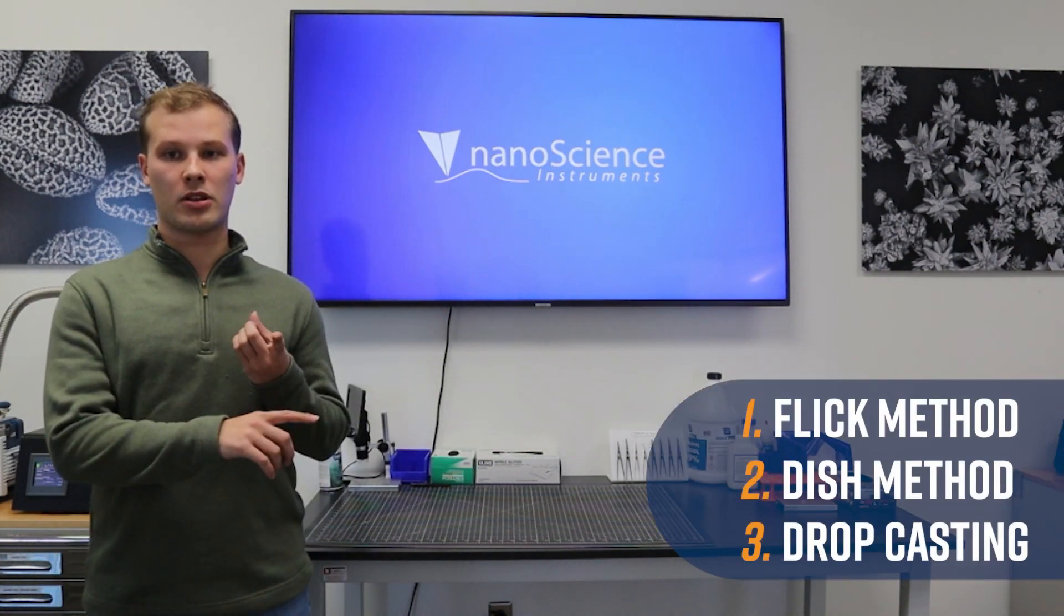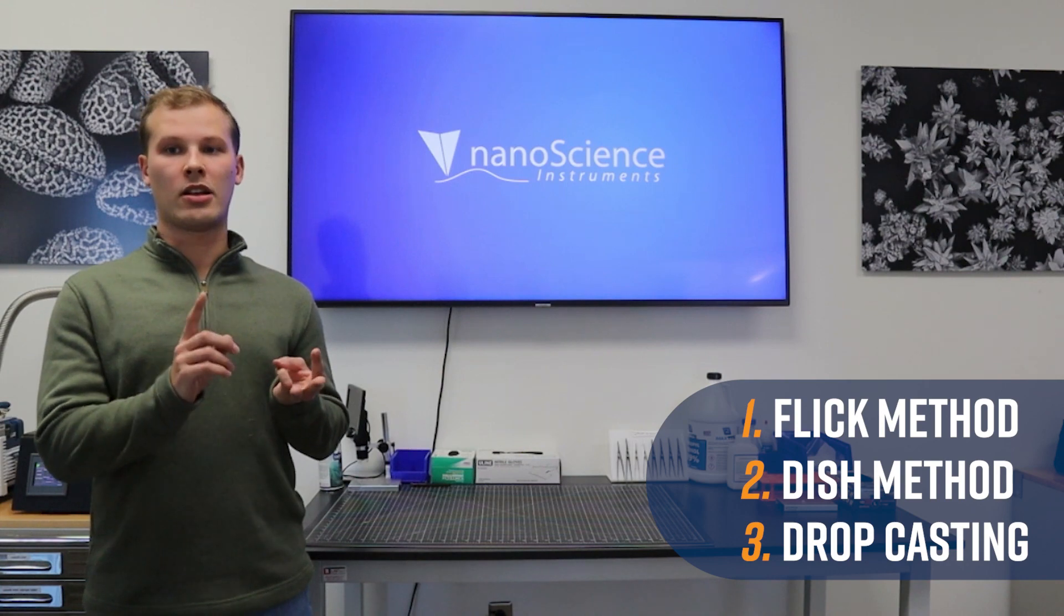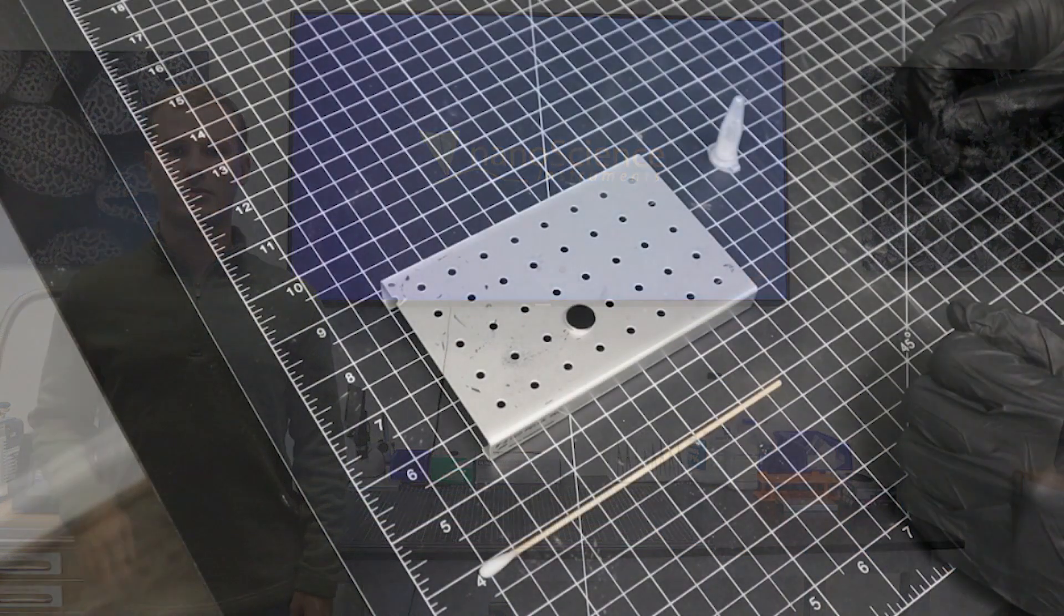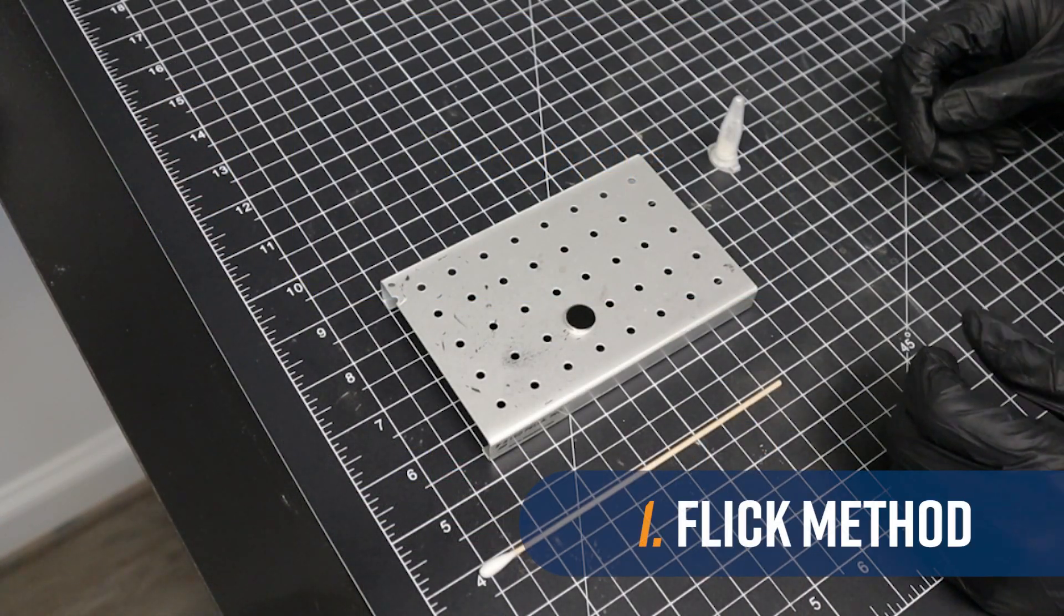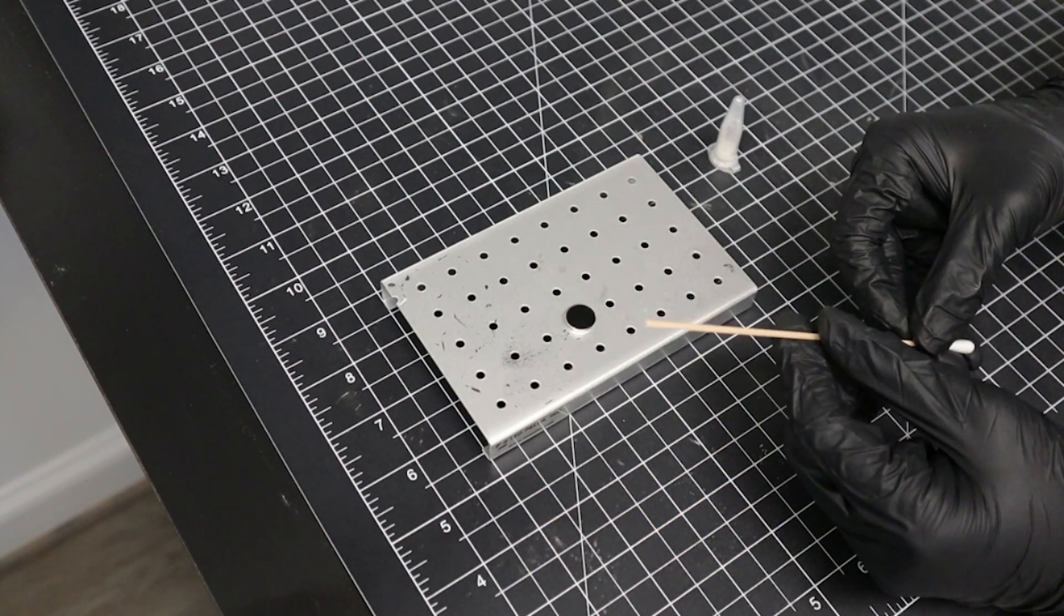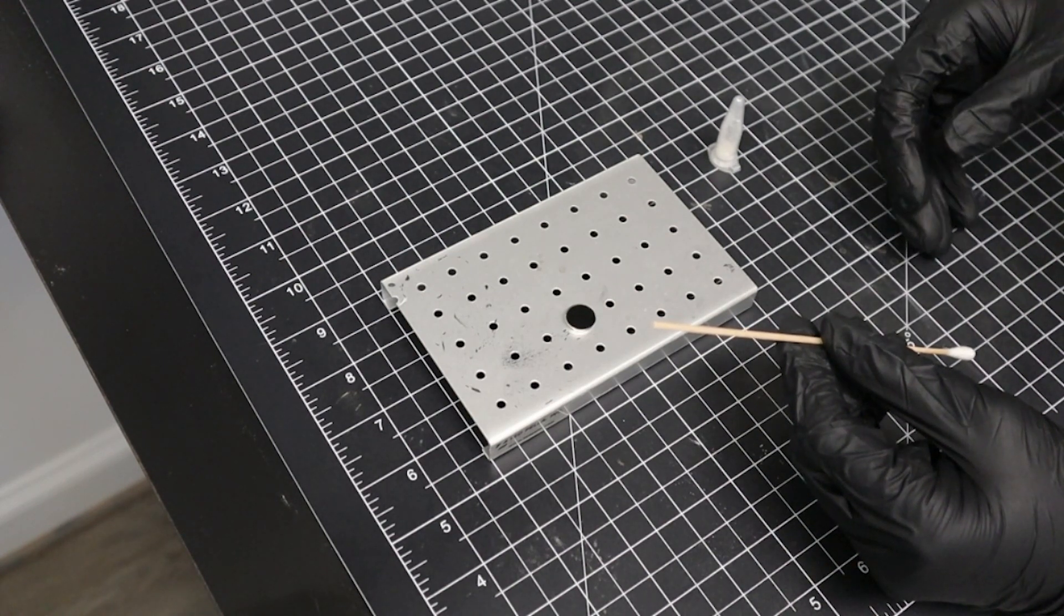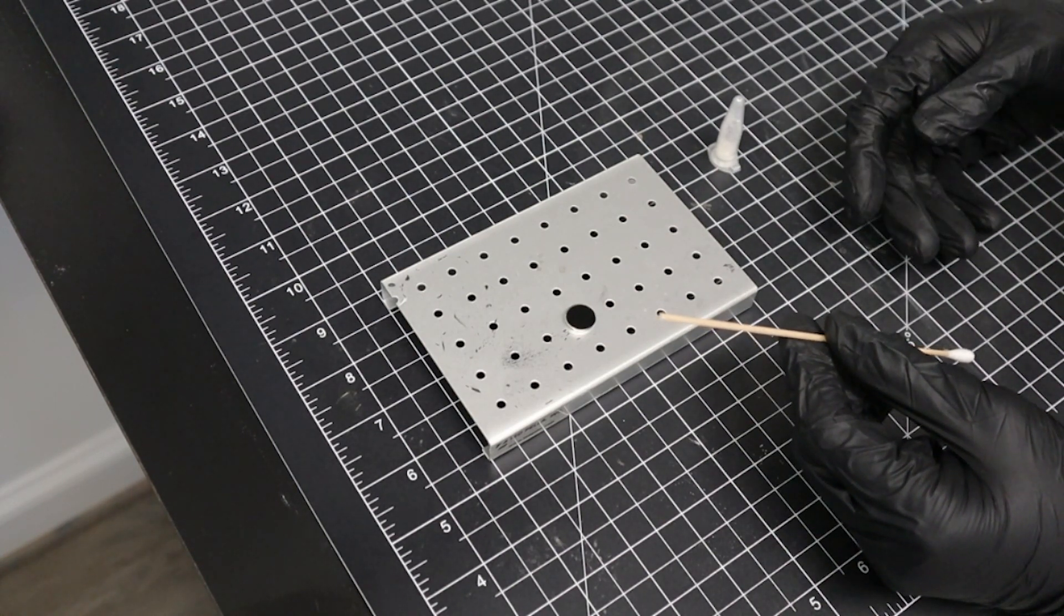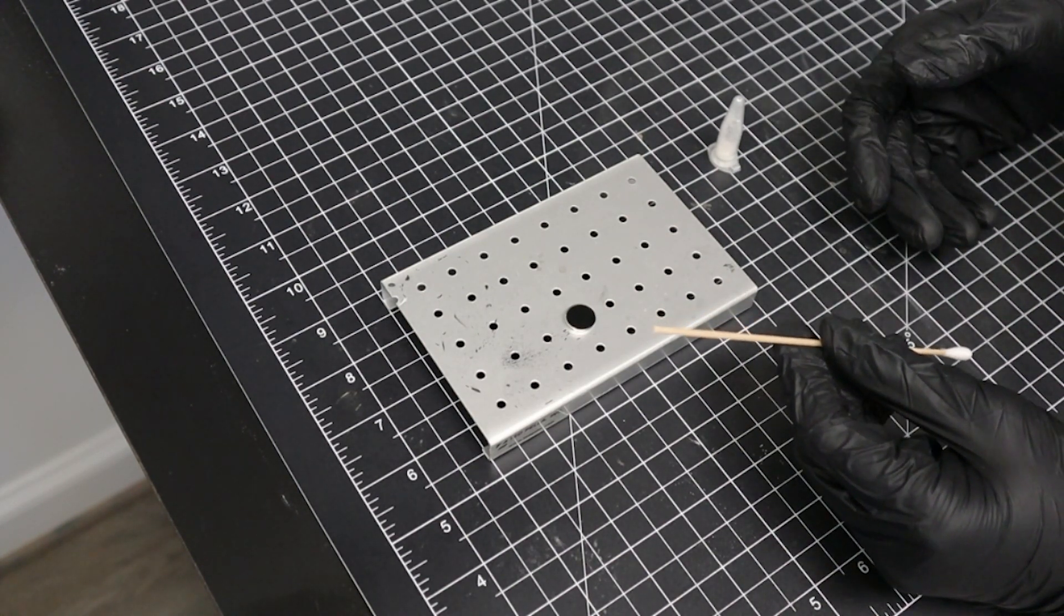These are the flick method, the dish method, and drop casting. The flick method utilizes a wooden cotton swab to disperse particles onto a sample stub. It is my preferred method, as it is both simple to execute and effective for any particles smaller than 500 microns.